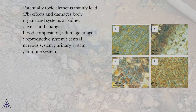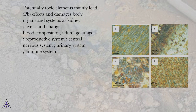Potentially toxic elements, mainly lead (Pb), affect and damage body organs and systems such as the kidney and liver, change blood composition, damage the lungs, reproductive system, central nervous system, urinary system, and immune system.